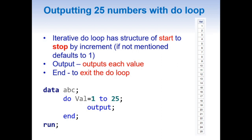To solve this problem we need to understand two concepts. The first one is the DO loop and the second one is the MOD function. First, let us look into how we can output 25 numbers with a DO loop.